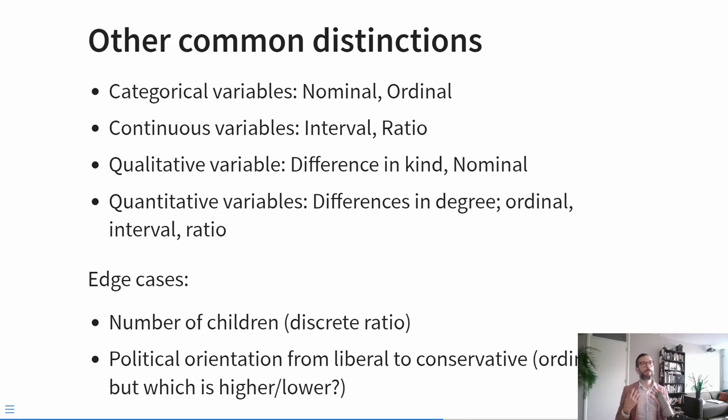We will often talk about categorical variables — an umbrella term for the nominal and ordinal measurement levels. You will also hear people talk about continuous variables — an umbrella for interval and ratio levels. You will also hear qualitative variables, typically synonymous with nominal measurement level, and quantitative variables, which encode a difference in degrees — this could be ordinal, interval, or ratio.